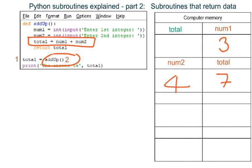Notice this is a new variable, not the same variable named total that was made outside of the subroutine. We now have two variables named total: one made outside the subroutine, and this new local variable made inside the subroutine.